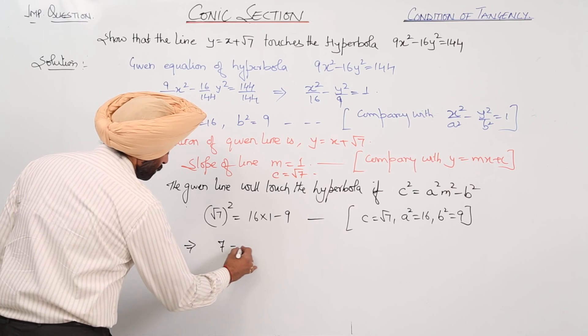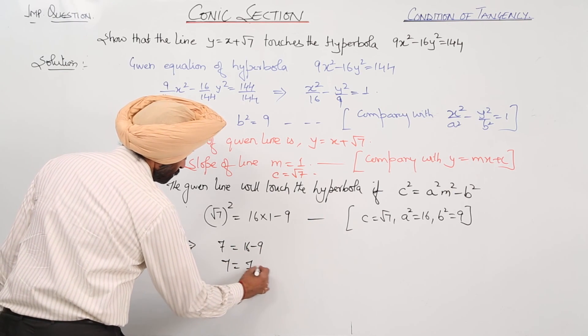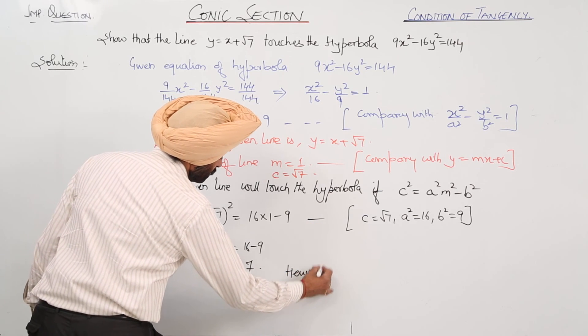Now we have 7 equals 16 minus 9, or 7 equals 7. Hence proved.